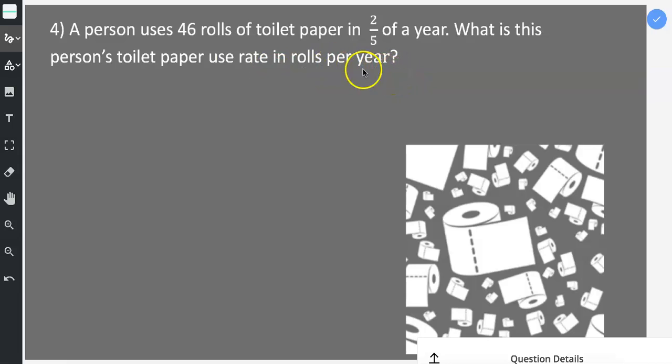The clue for what I'm supposed to do in this problem, I see here where it says rate and then here where it says rolls per year. When I see this per and then I see these two things like rolls and year, that's my clue that I'm finding unit rate.